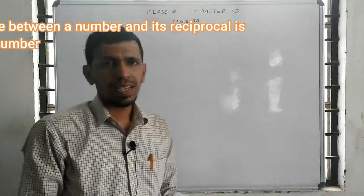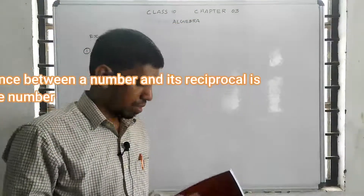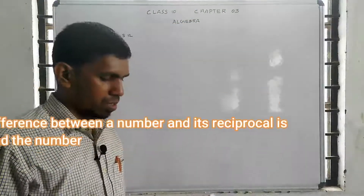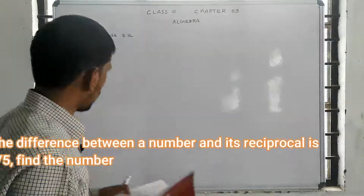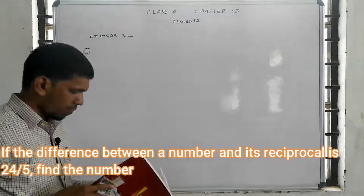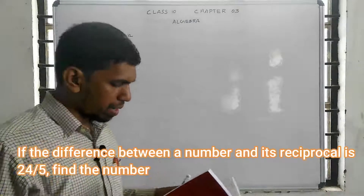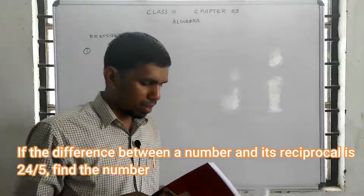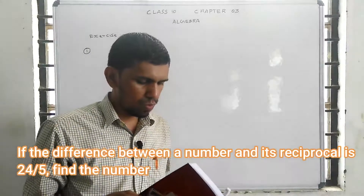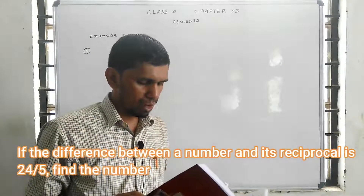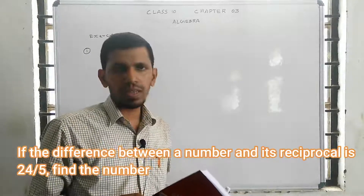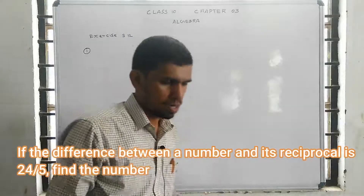Asalaam alaikum students. Exercise 3.12, Question 1. If the difference between a number and its reciprocal is 24 divided by 5, find the number.